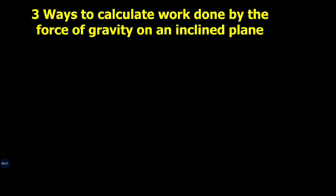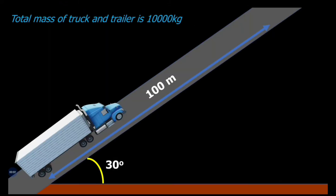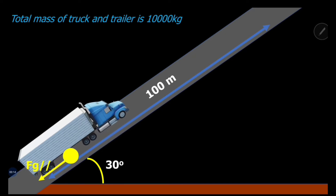In this video we're going to talk about three ways to calculate work done by the force of gravity on an inclined plane. We have a track of mass 10,000 kilograms moving up an incline of length 100 meters. The angle of inclination is 30 degrees. Method one: we're going to consider the parallel component of the force of gravity.